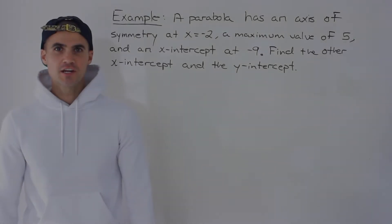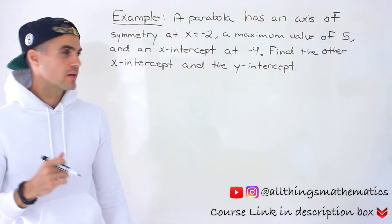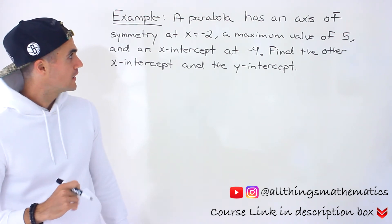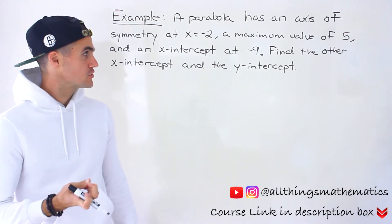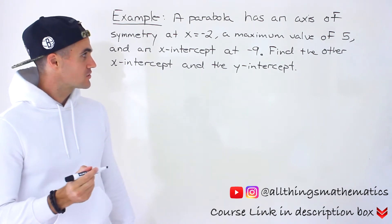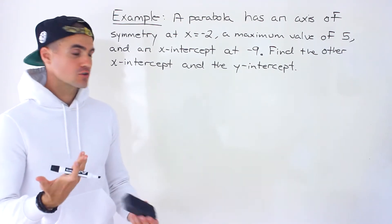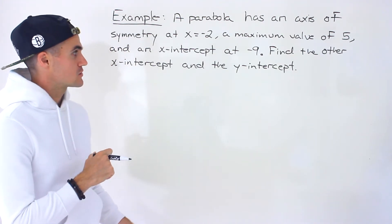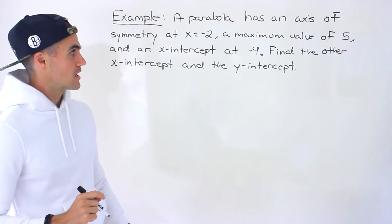Welcome back, everyone. Patrick here. Moving on to another question dealing with quadratics. We're told that a parabola has an axis of symmetry at x equals negative 2, a maximum value of 5, and an x-intercept at negative 9. Given those characteristics, we have to find the other x-intercept and also the y-intercept.